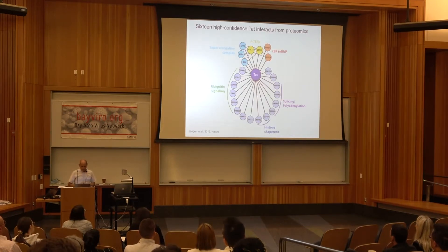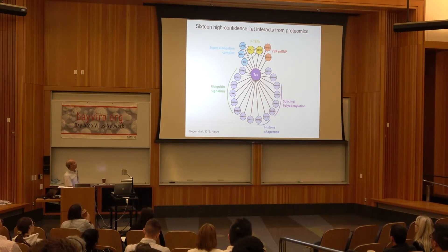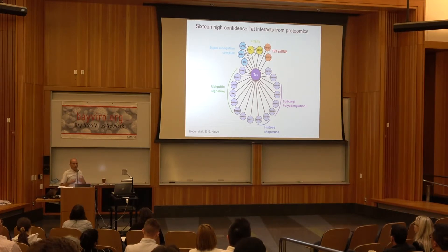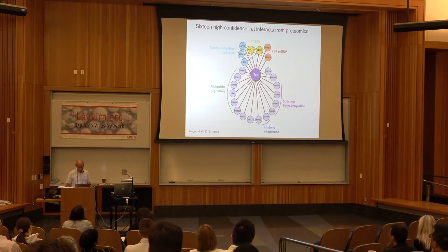In collaboration with Nevin Krogan, we looked at the proteome of HIV, and when we examined the interacting partners of TAT, we discovered a variety of new host factors that hadn't been previously implicated. The focus today is on factors involved in ubiquitin signaling — ubiquitin ligases and other factors. It's been known that post-translational modifications, such as acetylation studied by Melanie Ott, are important for TAT function.